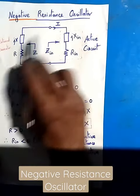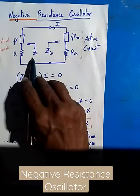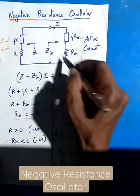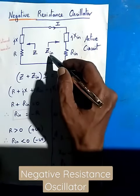Negative resistance oscillator. This is an external resistor whose impedance is Z. This is an active circuit whose impedance is Zin.